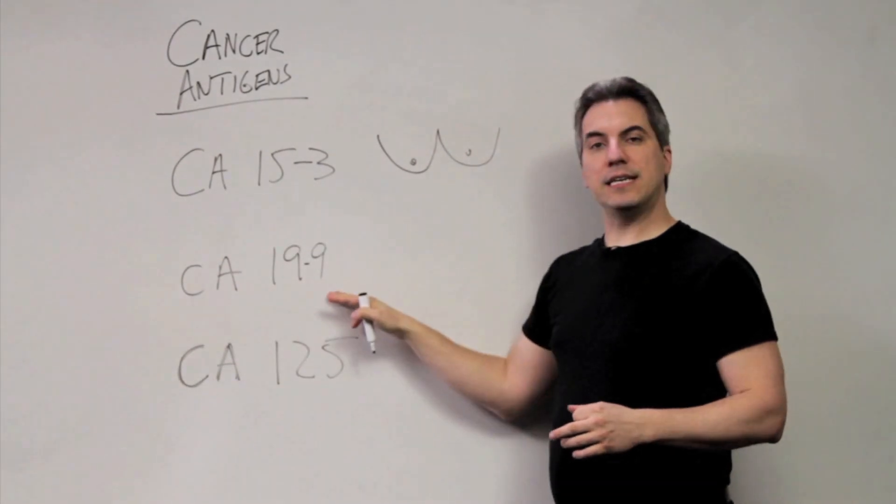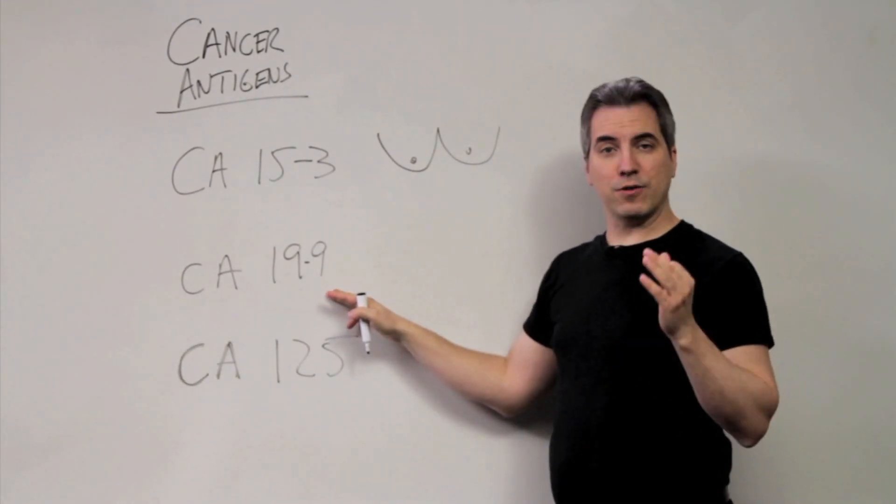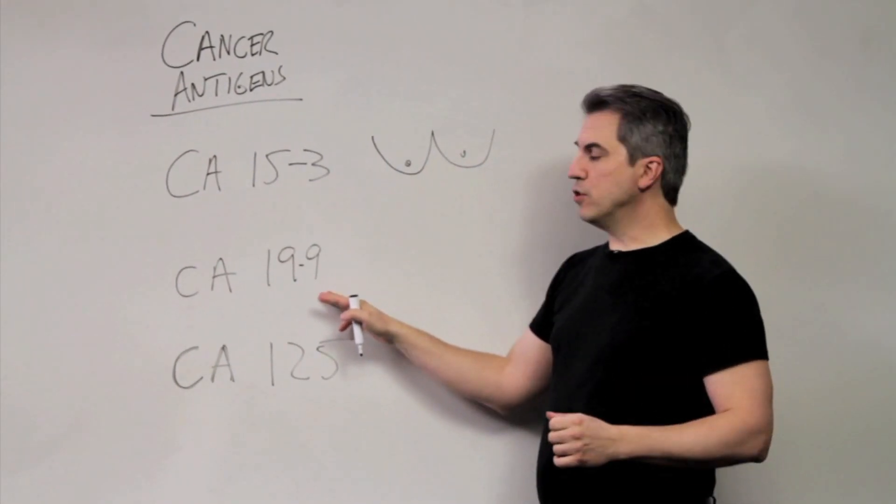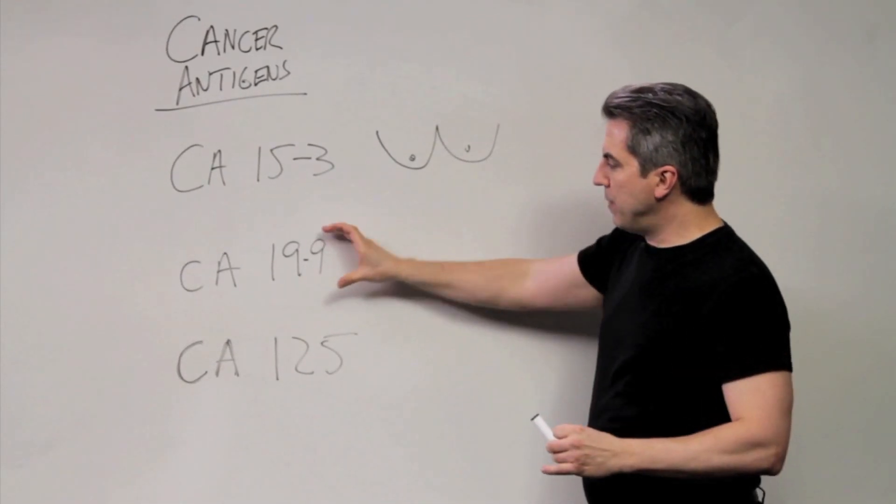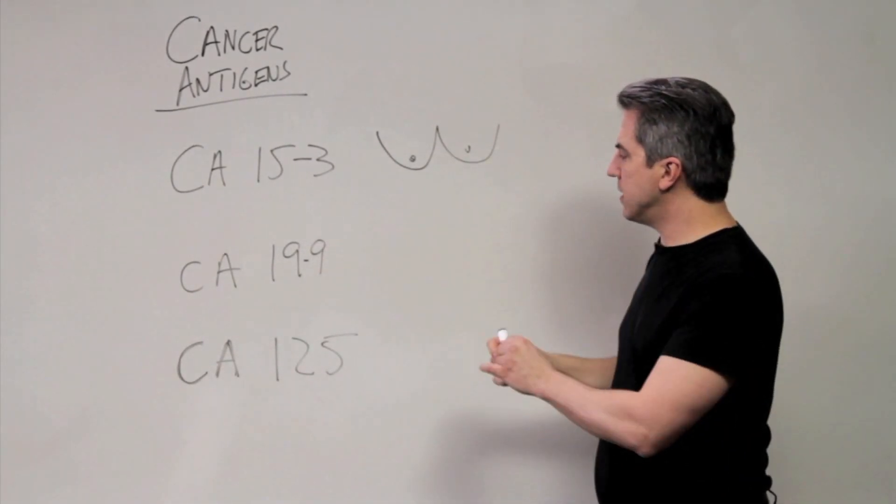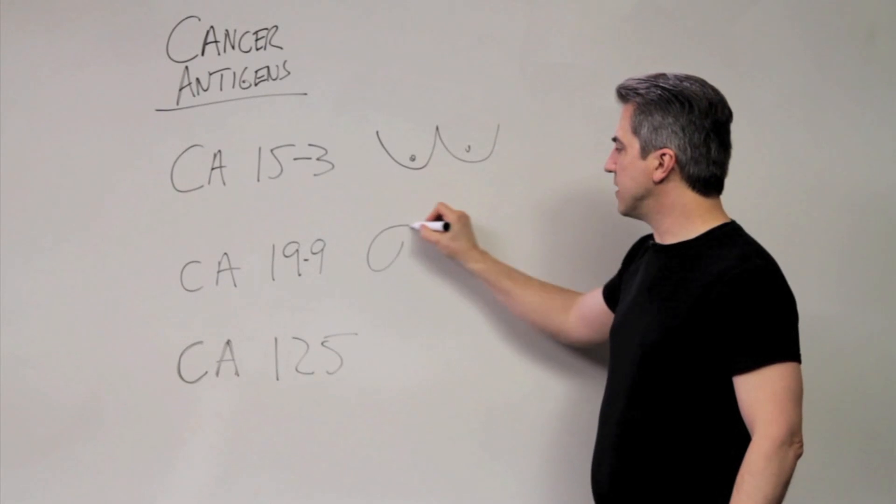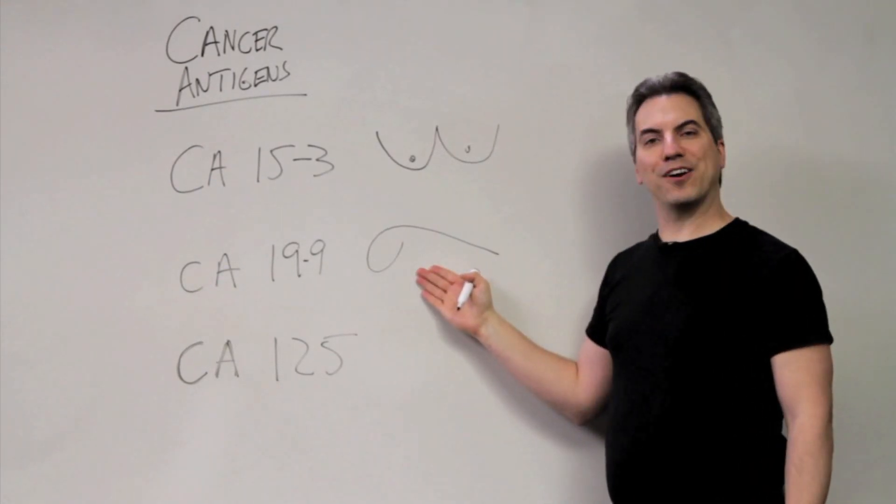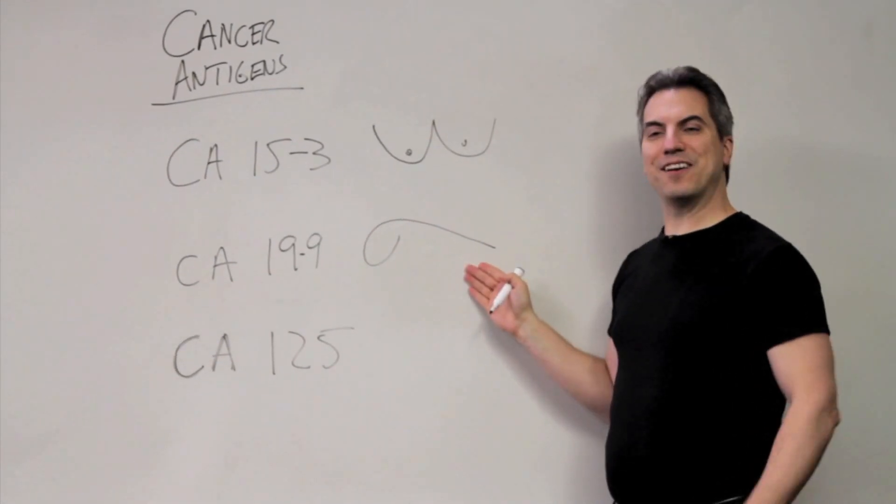Same thing for this one. CA 19-9. We use this to follow pancreatic tumors. So again, what we'll do is we'll take the last number, the 9, and we'll basically turn it on its side. Just turn it on its side. And when I take a 9, put it on its side, notice we have a pancreas. It's a 9 on its side. Pancreas.